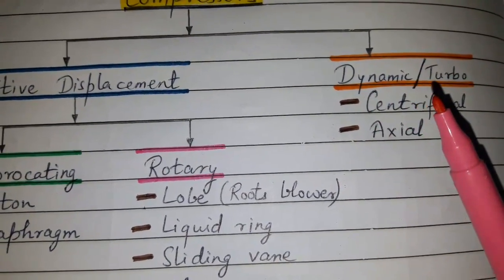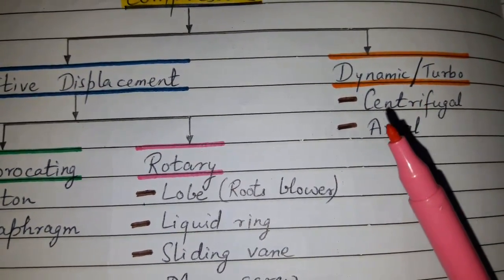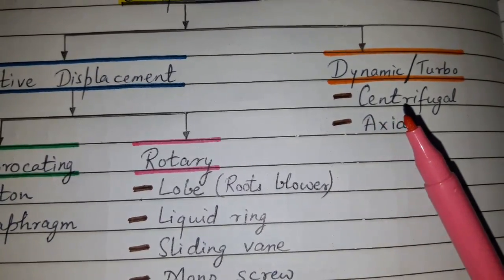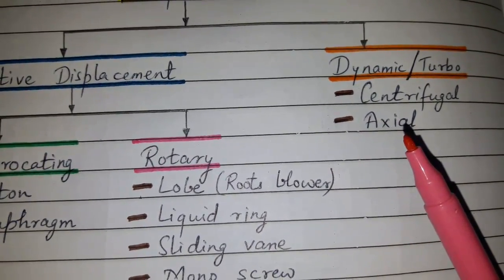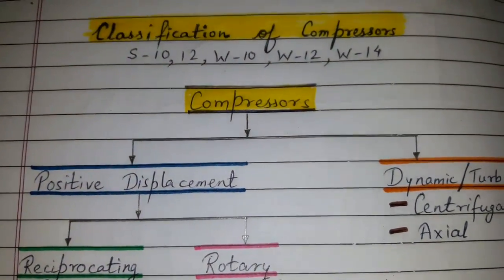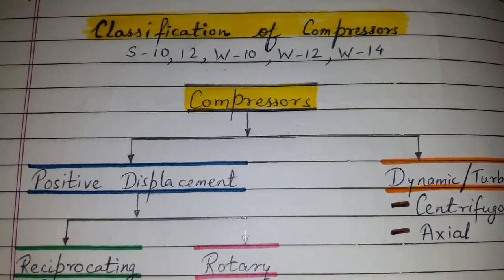Dynamic or turbo compressors can be further classified as centrifugal and axial compressors. This concludes the classification of compressors.